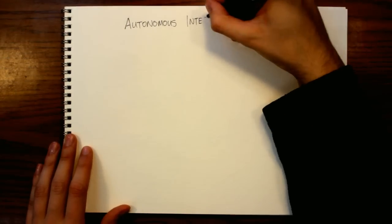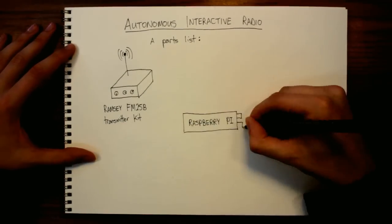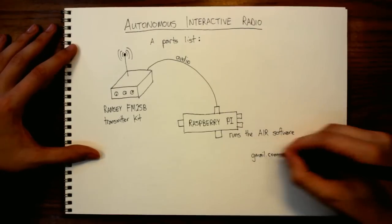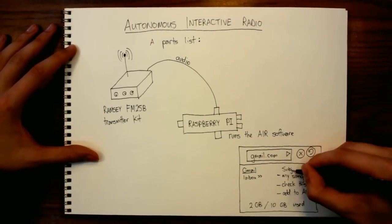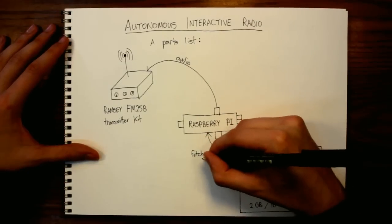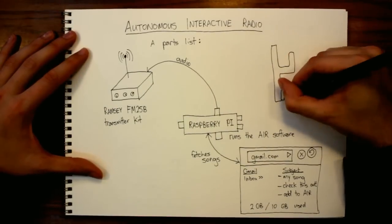You can build your own AIR pirate broadcast station with an FM transmitter, the open-source AIR software, a Raspberry Pi, a Gmail account, and an internet connection. With a 250 milliwatt FM transmitter, this setup will cover a few city blocks. An antenna for the transmitter will increase your range.